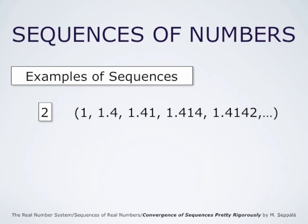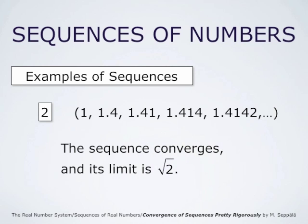The sequence 1, 1.4, 1.41, 1.414, 1.4142, and so forth is a little bit tricky. It is not completely obvious what the function defining this sequence is. In order to find that out, we must remember what is the decimal expansion of the square root of 2. We see that the first number 1 is just the first digit in the decimal expansion of square root of 2, then 1.4 gives the two first digits, and so forth. So this sequence converges and its limit is the square root of 2.